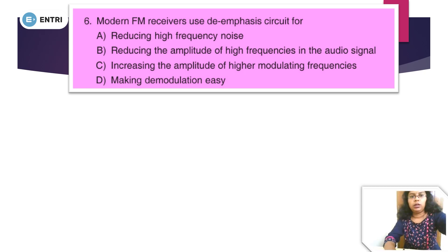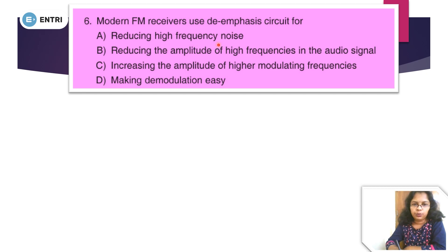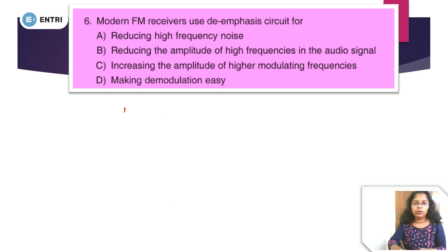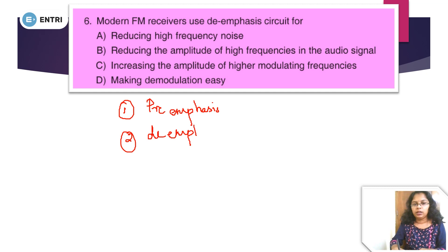We will discuss noise — for reducing the amplitude of the high frequencies in the audio signal, for increasing the amplitude of higher modulating frequencies, and for making demodulation easy. We will do pre-emphasis and de-emphasis. Pre-emphasis is the first process, and de-emphasis is used in FM circuits. Pre-emphasis is on the transmitter side, and de-emphasis is on the receiver side. They are complementary and opposite processes.